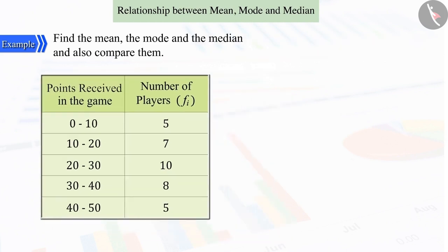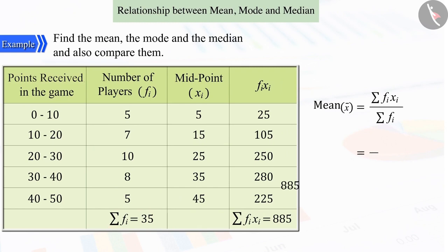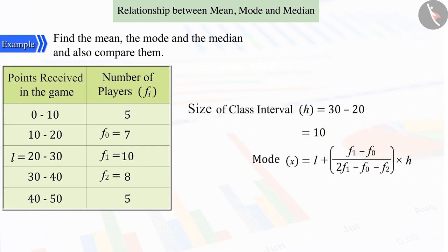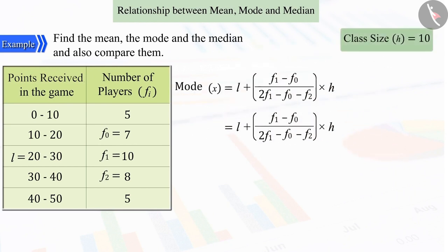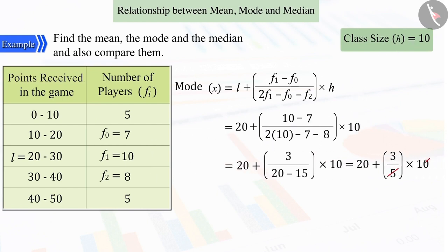To get the mean from the above data, substituting the sum of observations and the number of observations in the formula for the mean, and solving, the mean is obtained as 25.28. If we talk about the mode, substituting all the values from the above data in the formula for mode and solving, we get the value as 26.